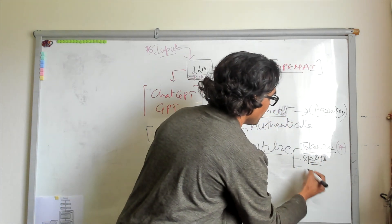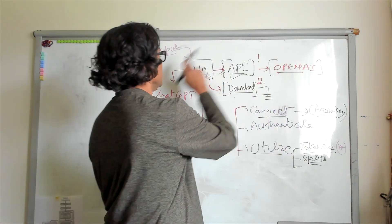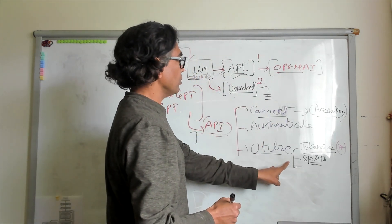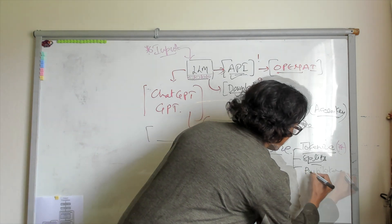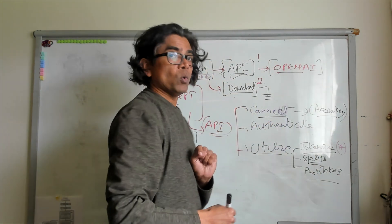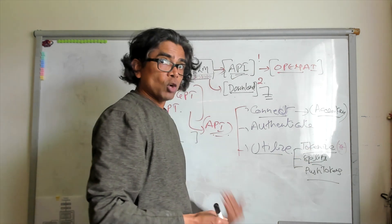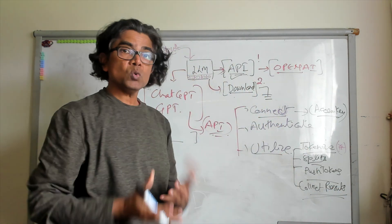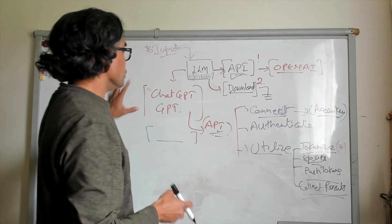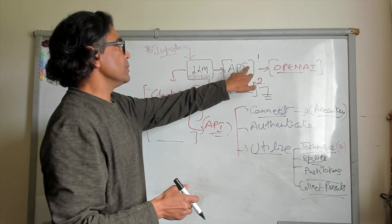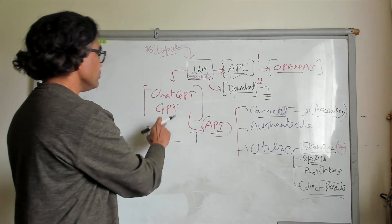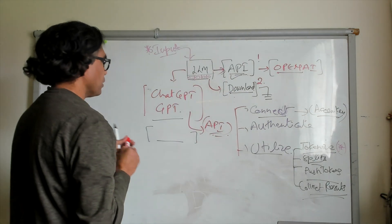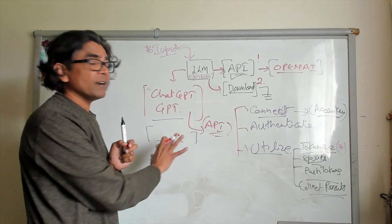After the tokens are split, you pass your tokens to the large language model — at that point the connection is happening and you are utilizing. You push the tokens and based on that you get the result output, and then you collect the results. So these four things — tokenize, split, push tokens, collect results — are what you perform in order to use a large language model accessible through API. This model could be an OpenAI-based model or any third-party model.